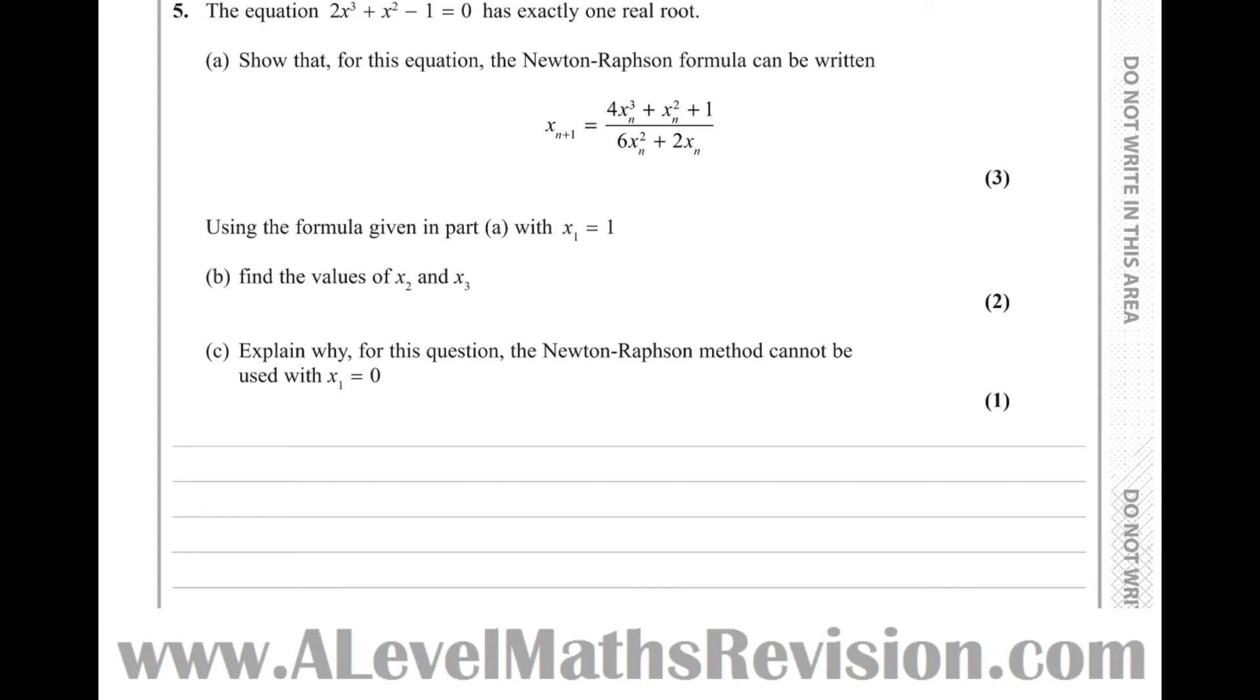So question 5, it says the equation 2x cubed plus x squared minus 1 equals 0 has exactly one real root. Show that for this equation, the Newton-Raphson formula can be written as xn+1 equals 4xn cubed plus xn squared plus 1 over 6xn squared plus 2xn.